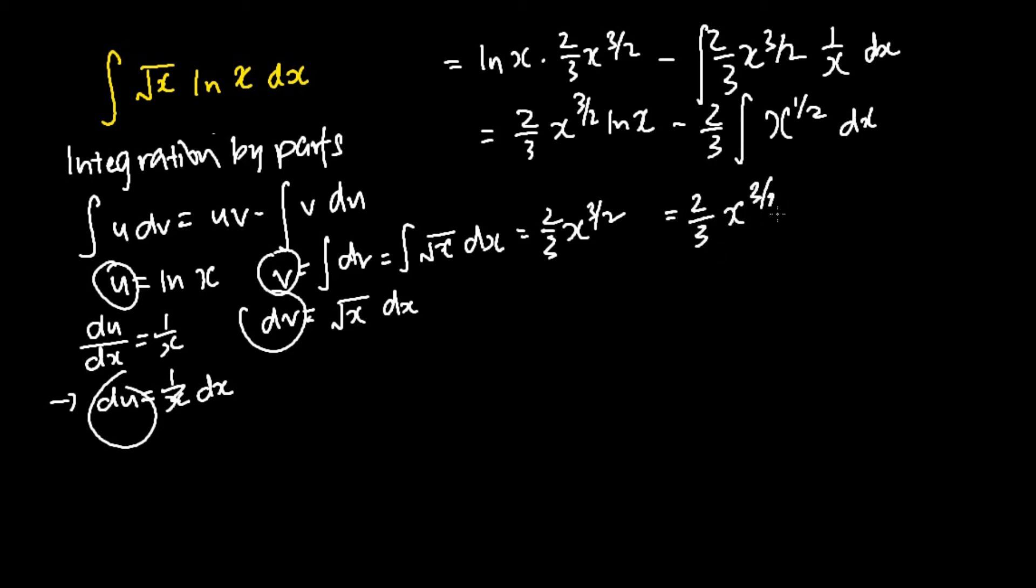So we first write down our first term as it is, and for the second term, the integral of x to the power half dx is x to the power 3 over 2 over 3 over 2 plus c.